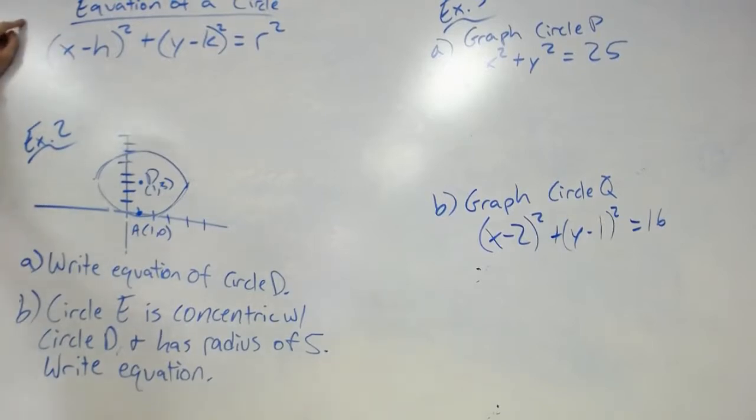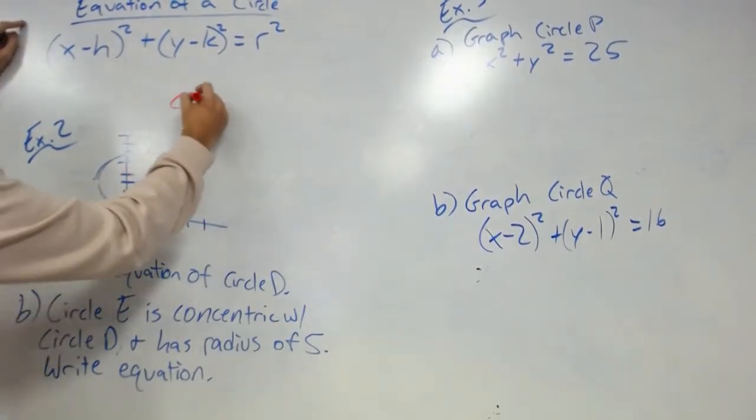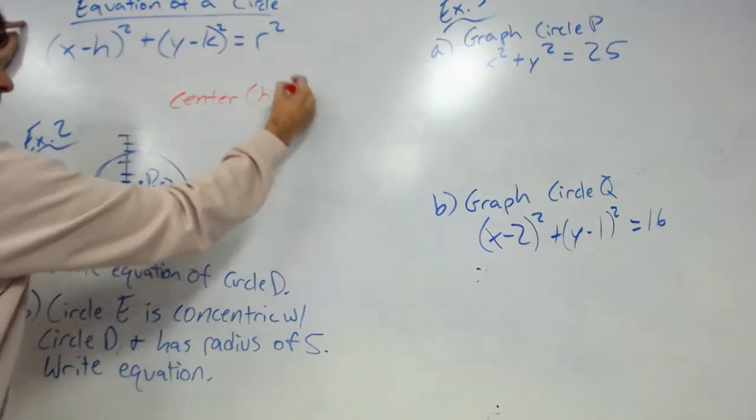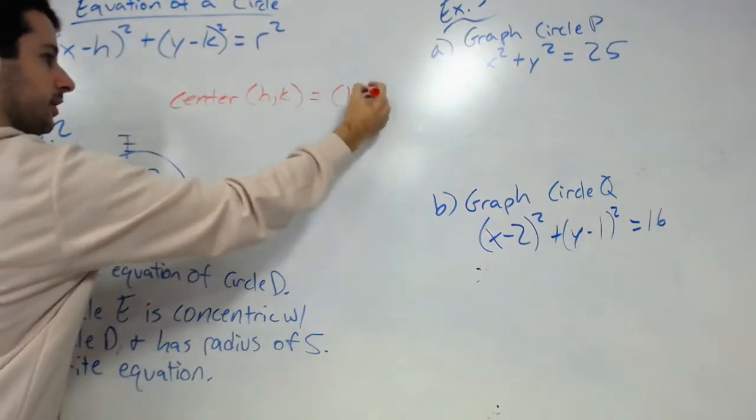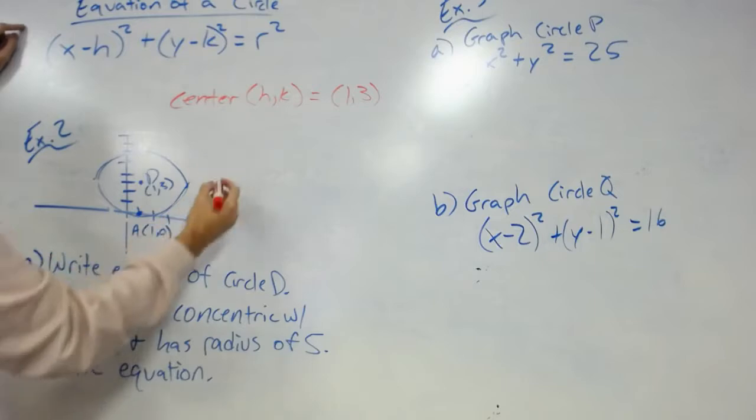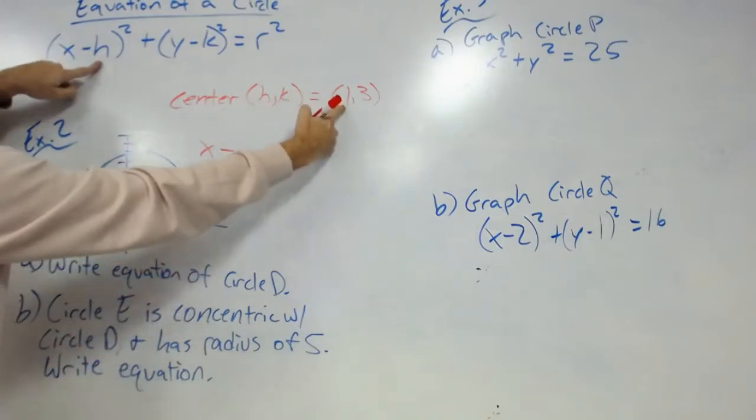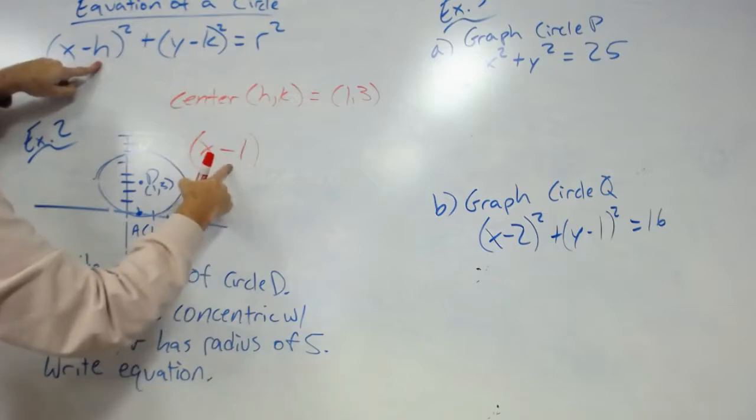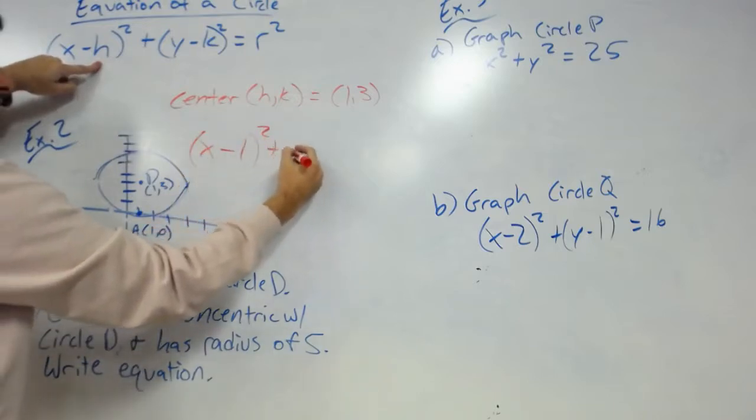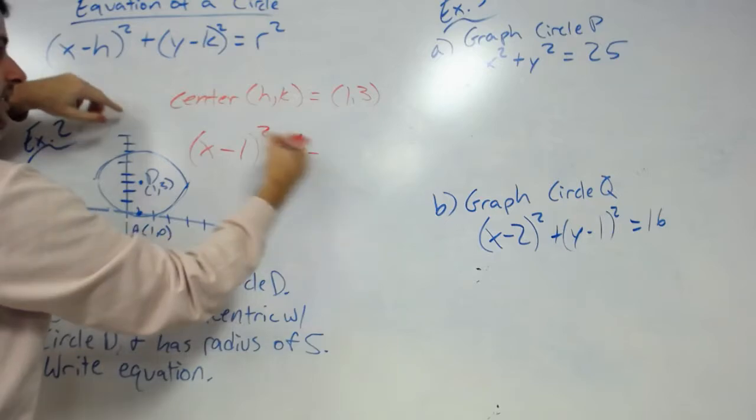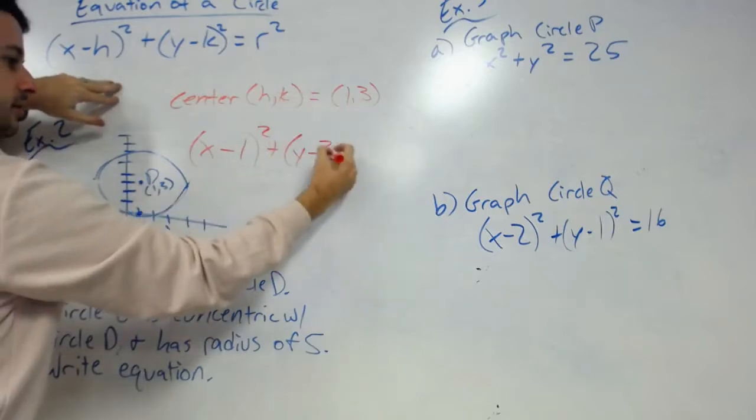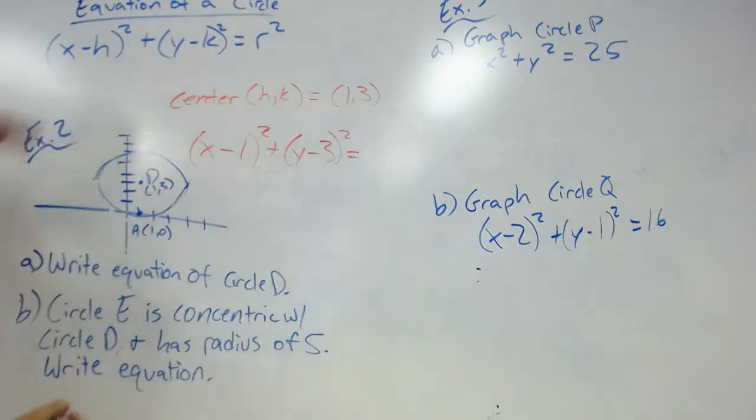Our center, or hk, is (1, 3). So I'm going to plug in x minus h is 1 - you got to leave that negative sign there - squared, plus y minus k, k is 3, squared.